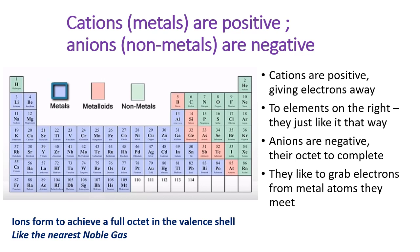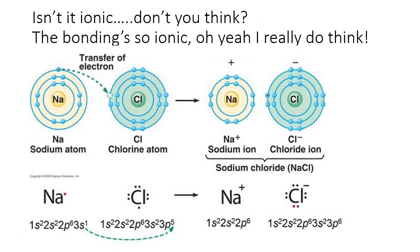And anions are negative, their octet to complete. They like to grab electrons from metal atoms they meet.